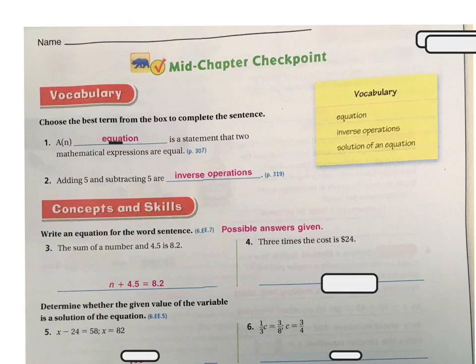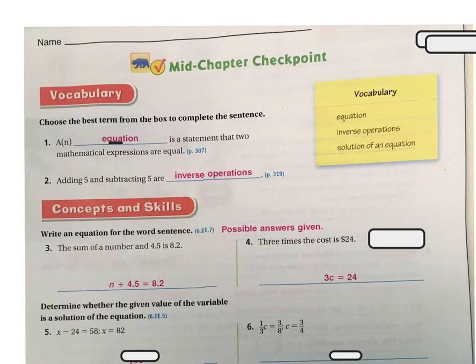So we're going to do times. 3 times something is — which is equals — 24. So when you're writing that in the expression: 3, and they did C for the cost, equals 24.